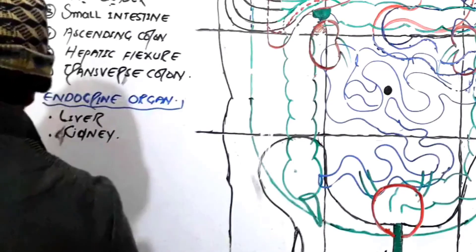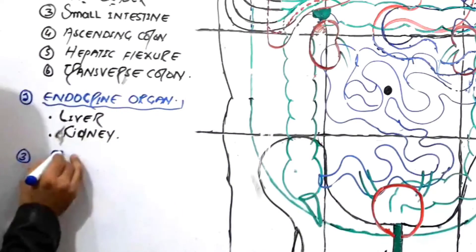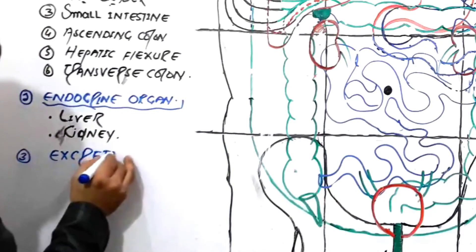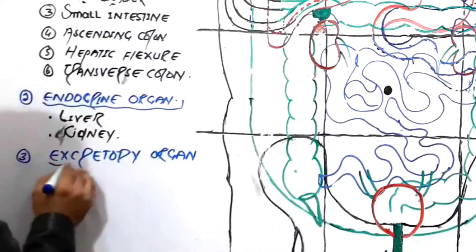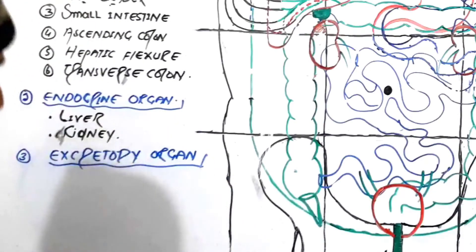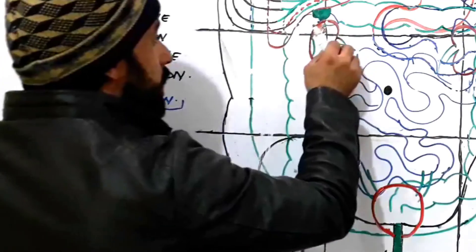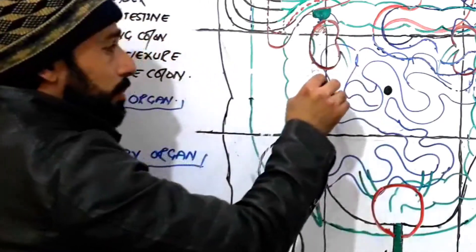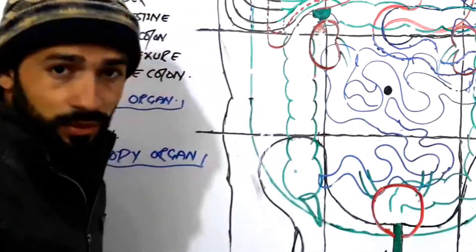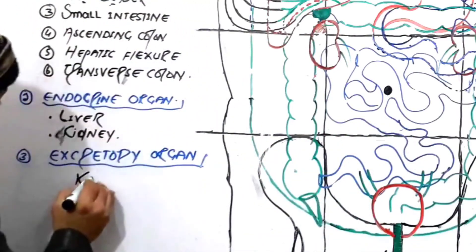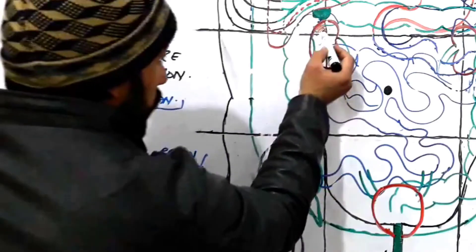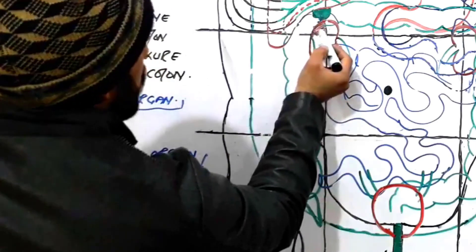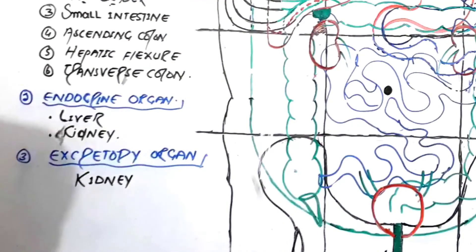The third group is the excretory organs. The kidney is very important for the excretion of different substances from our body. Some parts of the kidney are also found in the right hypochondric region, where it performs the function of excretion.